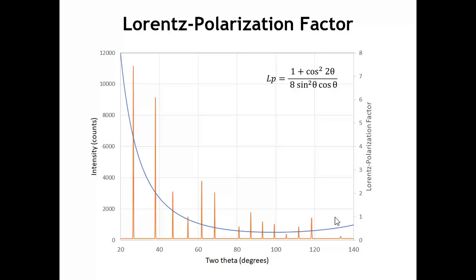So far, all of the terms we've discussed have had a rather smooth angular dependence — the drop-off in the form factor, and the Lorentz and polarization factors. Those factors together cannot explain some of the ups and downs we see in the diffraction pattern of polonium. So how do we account for that?